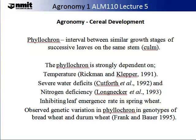The phyllochron is defined as the interval between similar growth stages of two successive leaves in the same culm, and has been used extensively to understand and describe cereal development. The phyllochron is strongly dependent on temperature, as stated by Richmond and Kepa in 1991, but severe water stress by Kupforth et al. in 1992 and strong nutrient deficiency by Longnecker et al. in 1993 also retarded the leaf emergence rate in spring wheat. This was demonstrated by Frank and Brewer in 1995, who observed genetic variation differences in the phyllochron of genotypes of bread wheat and durum wheat.